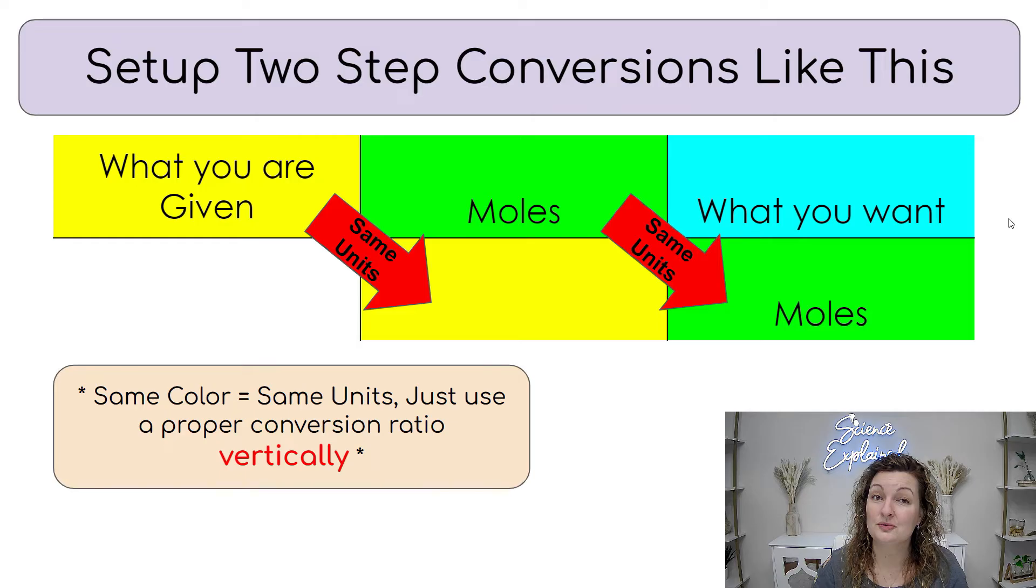But I want to show you what your bridge is really going to be set up looking like. So what you're given is always in your upper left hand corner and the same units will be diagonal down. So notice they're the same color because the units will be the same. And then we have moles in the middle. This top row is our road map that we just looked at. So we're going to pass through moles and then diagonal down is going to be moles as well. Now top right hand corner will always be what you want to find. Now remember vertically up and down, these are going to be equal to one another. So the moles have to be equal to whatever unit this is and vice versa.